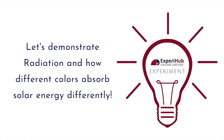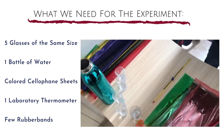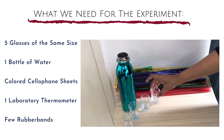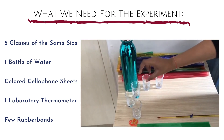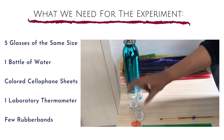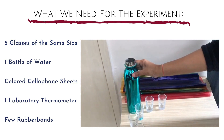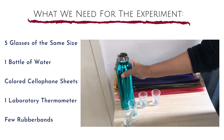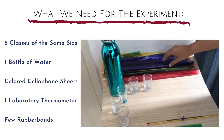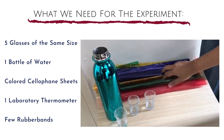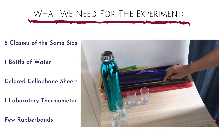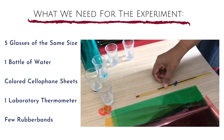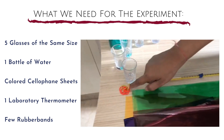Now, let's perform an experiment to demonstrate this. For the experiment, what we need are five glasses of the same size, a bottle with normal water at normal temperature or slightly colder, and cellophane colored sheets of different shades. We have taken red, green, yellow and blue colors, a laboratory thermometer and also a few rubber bands.